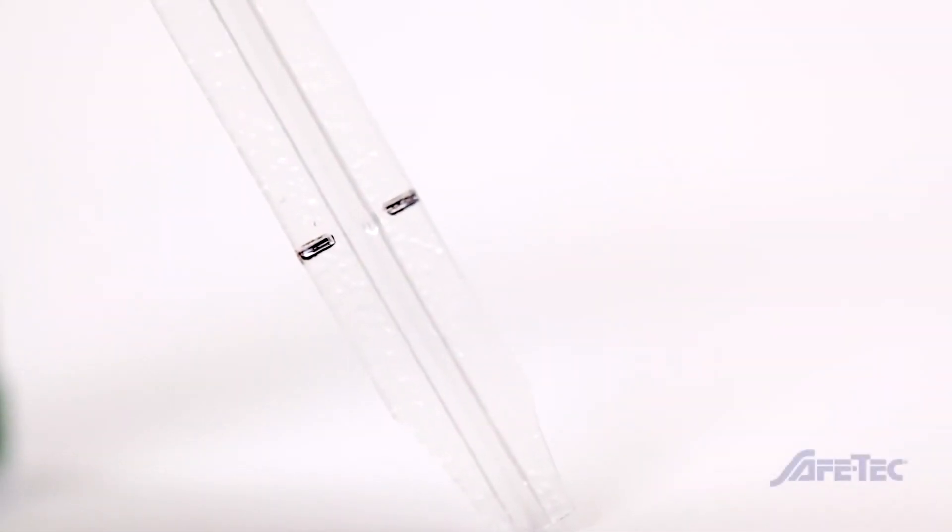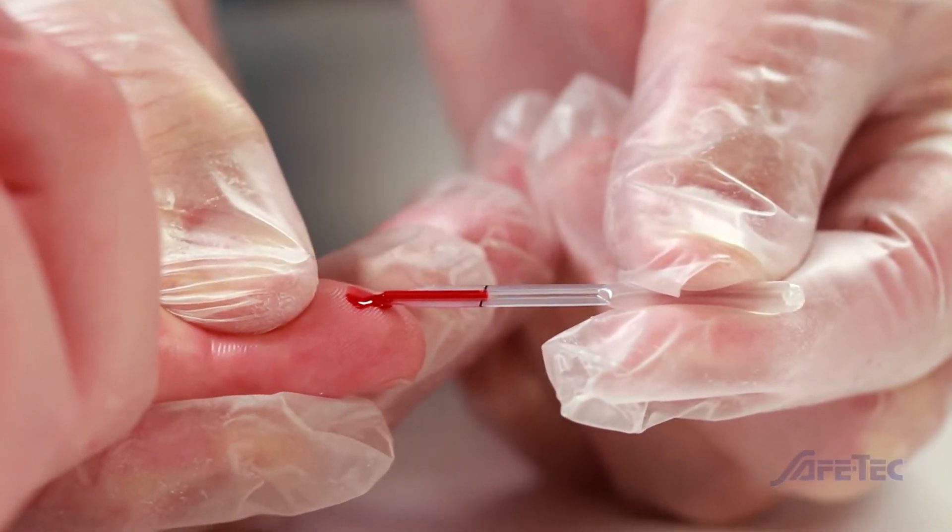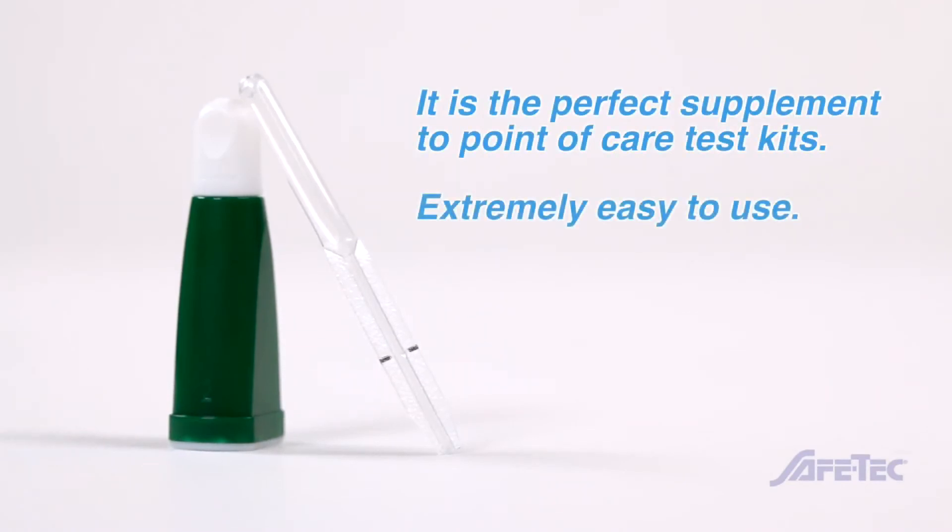Microsafe is a one-piece plastic tube used to collect and dispense microsamples of whole blood from a finger stick. It is the perfect supplement to point-of-care test kits and is extremely easy to use.